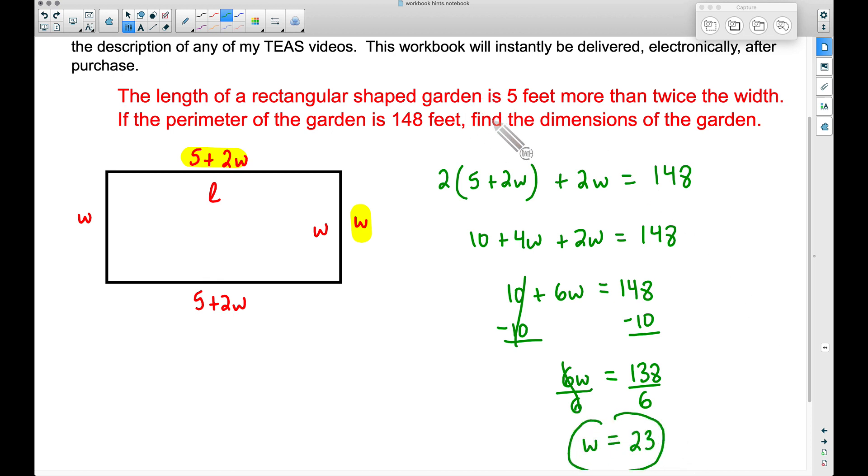Now we want to find the dimensions of the garden. We have the width, and the width equals W, which we said was 23 feet. To find the length of our garden, the length is going to equal 5 plus 2W. So 5 plus 2 times 23 is 46, plus 5 is 51.